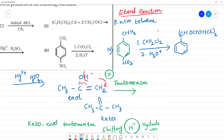CrO2Cl2 reacts with the CH3 group and forms a chromium complex. The intermediate is the chromium complex of the aldehyde, and this reagent is used to selectively oxidize the methyl group.